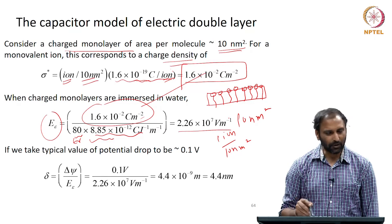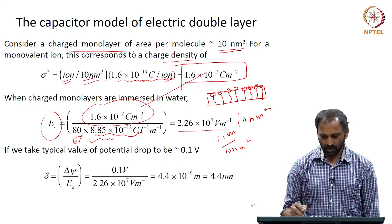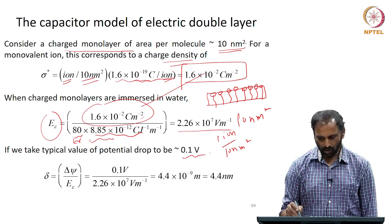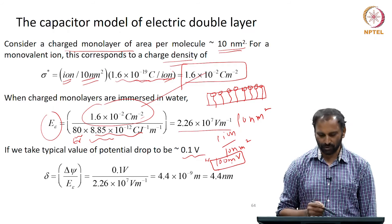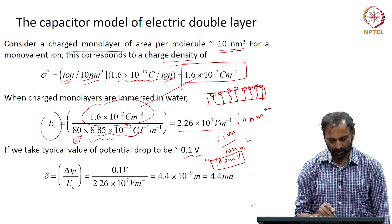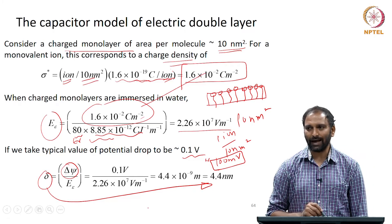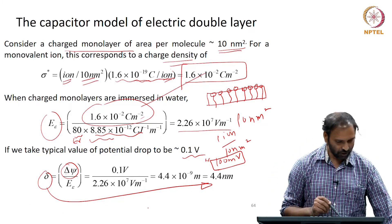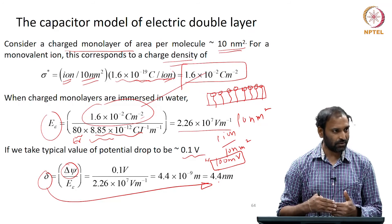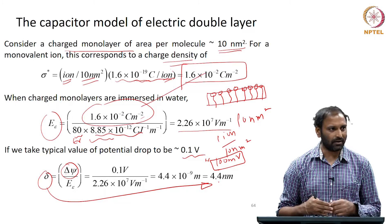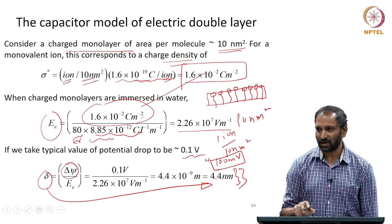Typically, when people talk about charged surfaces, the typical potential drop is of the order of 0.1 volts, or 100 millivolts. If I substitute that potential drop and the electric field to get δ, the value of δ comes out to be 4.4 nanometers in this particular example.